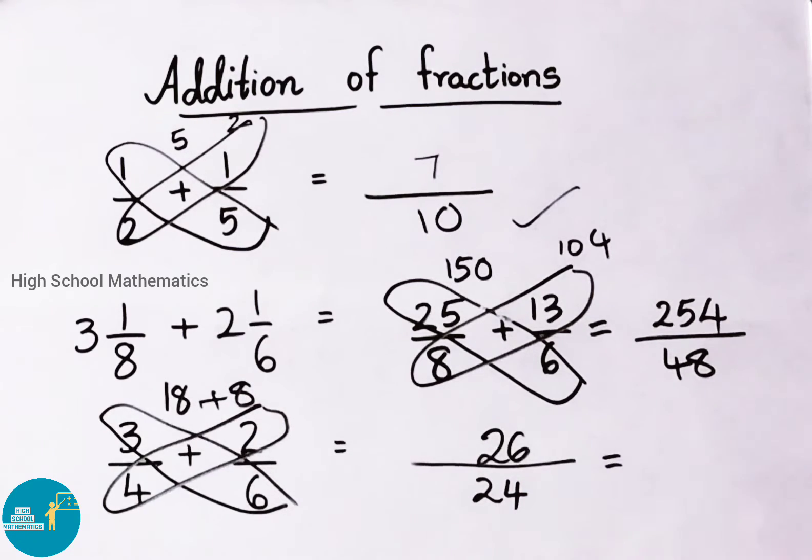So 26 by 24 we got. In the 2 table, 26 is 13 times and 24 is 12 times. So the answer is 13 by 12.